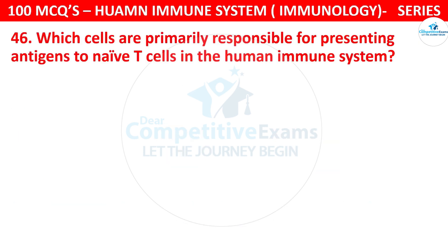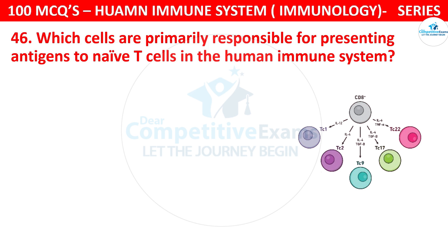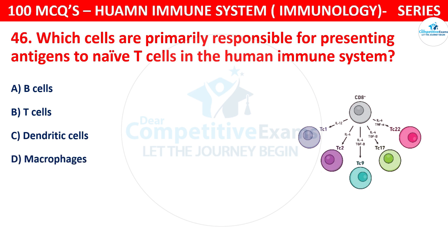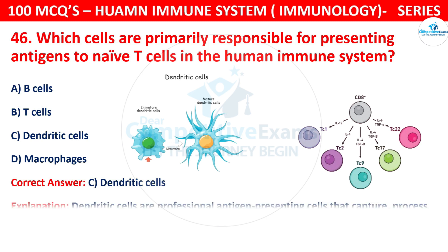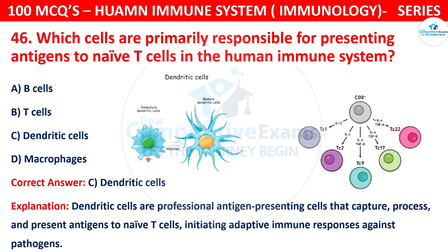Question number 46. Which cells are primarily responsible for presenting antigens to naive T cells in the human immune system? The options are B cells, T cells, dendritic cells, or macrophages. The correct answer is C, that is dendritic cells. Dendritic cells are professional antigen-presenting cells that capture, process, and present antigens to naive T cells, initiating adaptive immune responses against pathogens.